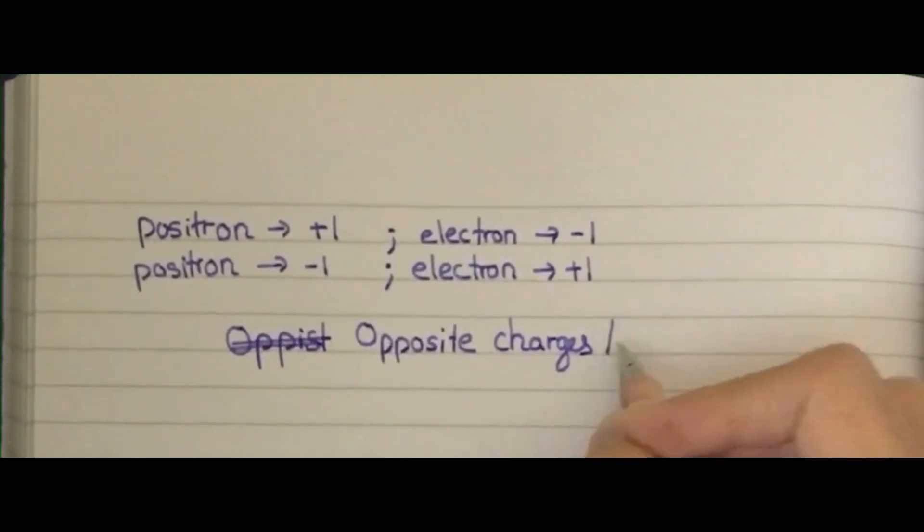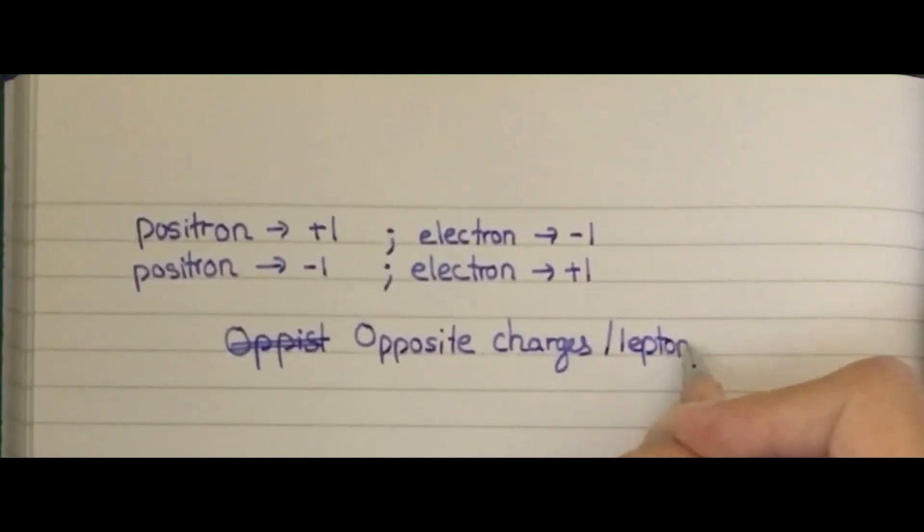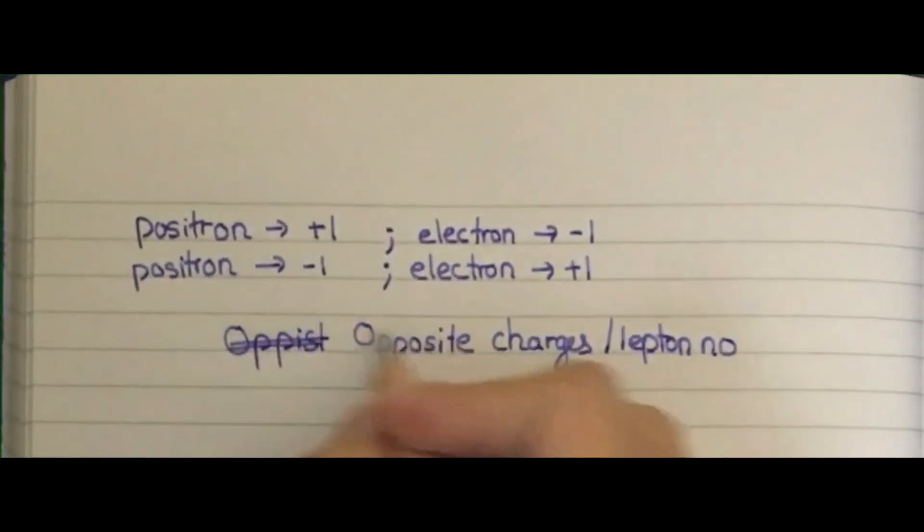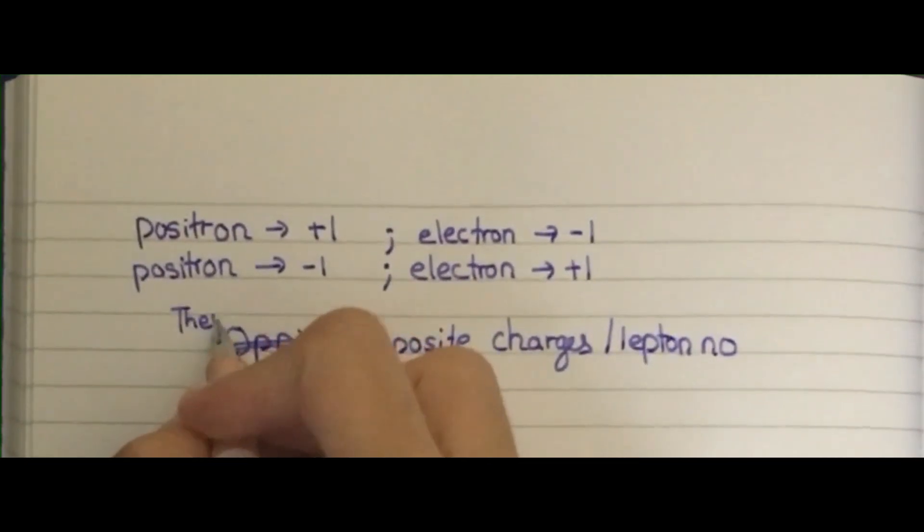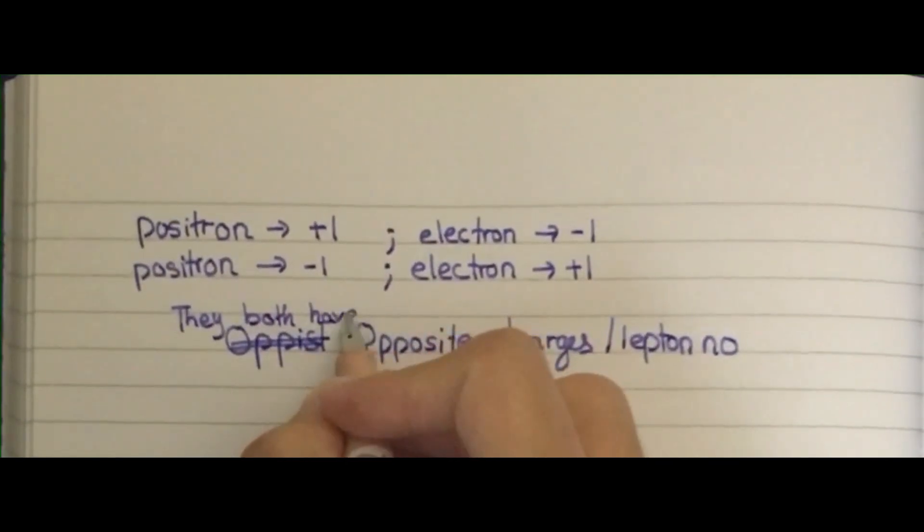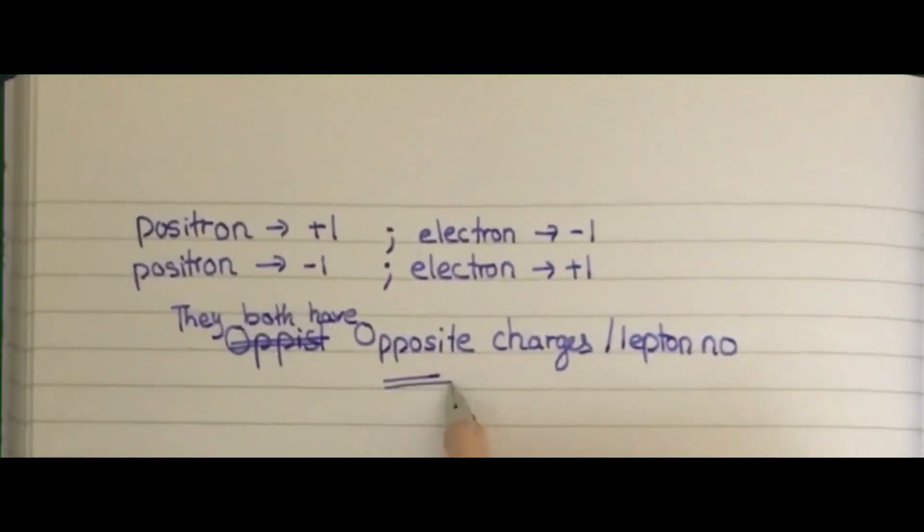Charges slash lepton number. They both have opposite charges or lepton number. This is your final answer.